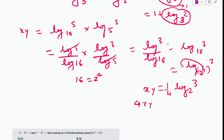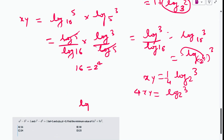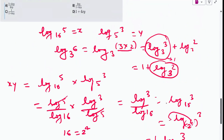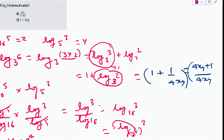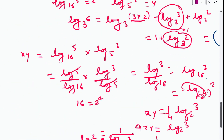From x·y = (1/4)·log₂3, we get 4xy = log₂3. Since log₃2 = 1/log₂3, we have log₃2 = 1/(4xy). Substituting back: log₃6 = 1 + log₃2 = 1 + 1/(4xy) = (4xy + 1)/(4xy). That is the final answer.